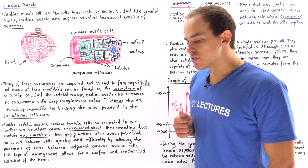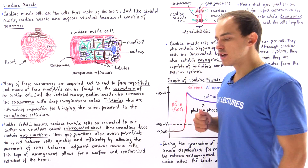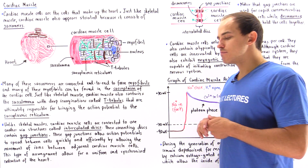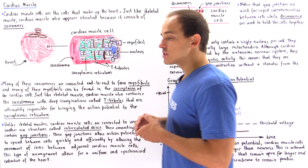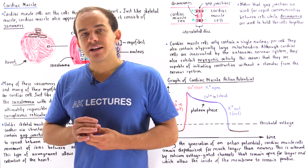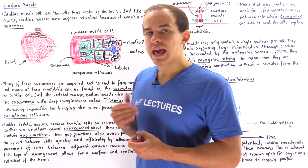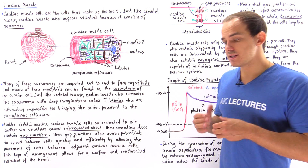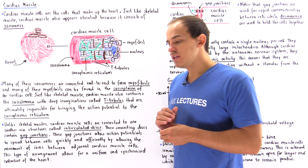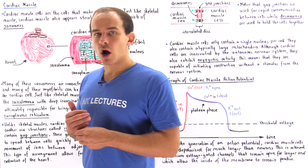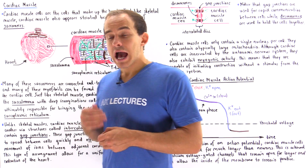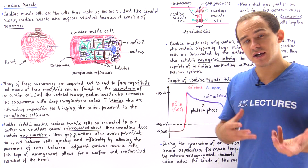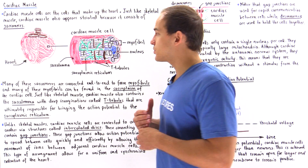The next type of muscle we're going to discuss is the cardiac muscle. The cardiac muscle is the muscle that makes up the heart. Just like skeletal muscle is striated because it consists of individual units we call sarcomeres, our cardiac muscle is also striated because it consists of sarcomeres.